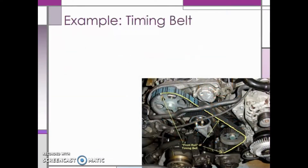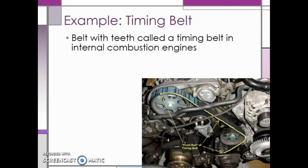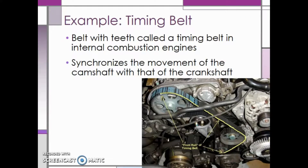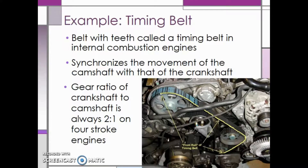A great example of a belt drive pulley is a timing belt on your car. A timing belt is a belt with teeth on internal combustion engines. A timing belt synchronizes the movement of the camshaft with that of the crankshaft so that the valves open and close at the top of each cylinder at exactly the right time relative to the movement of each piston. The gear ratio of the crankshaft to the camshaft is always 2 to 1 on 4-stroke engines, which means that the crankshaft is larger than the camshaft.